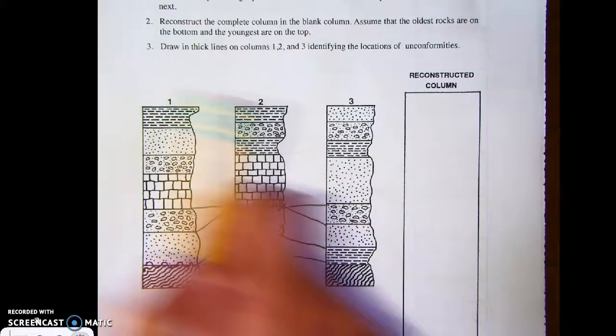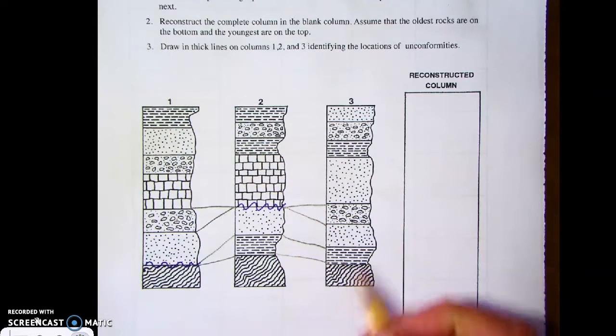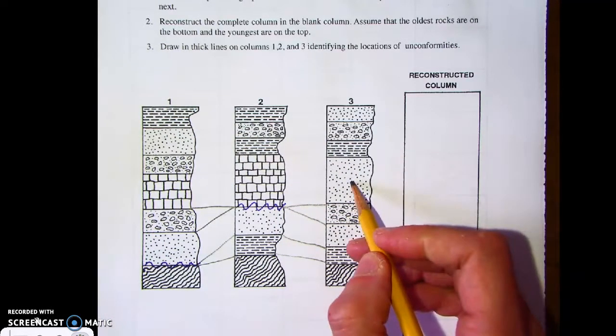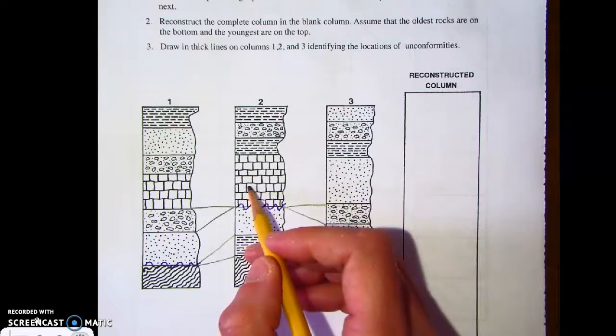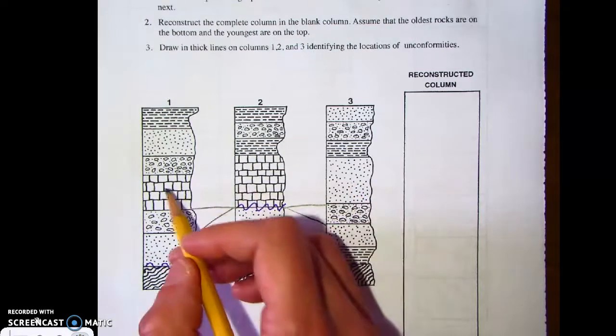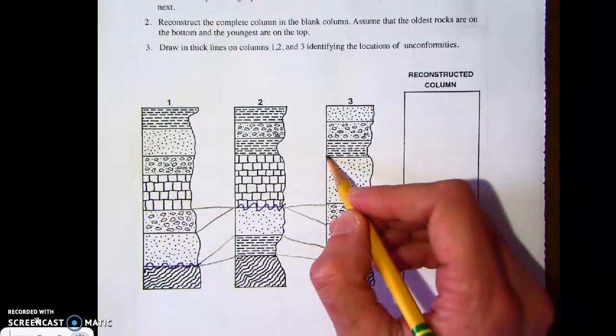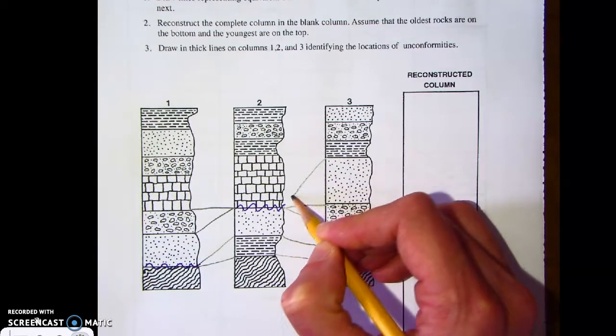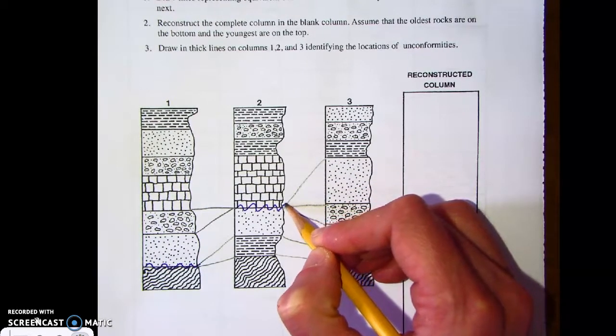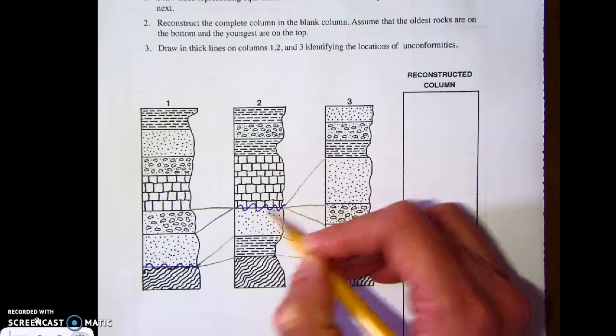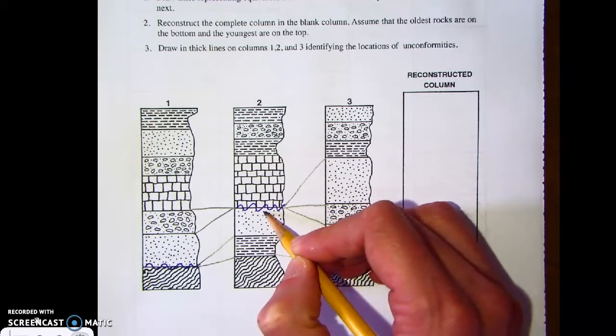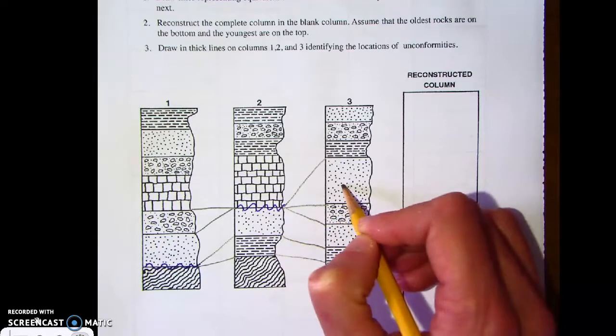If we move on, now we have a sandstone layer here. The sandstone layer is missing here, here, and here. Which means I'm going to come down like this. And again, we have that unconformity. The weathering and erosion eroded away that sandstone.